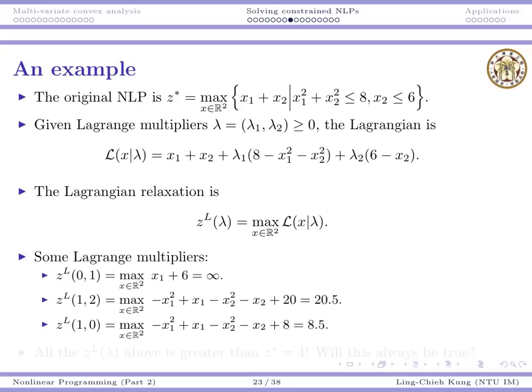Different lambda definitely gives you different values. Let's see some examples. Suppose I randomly pick 0 and 1 as λ1 and λ2. When I set λ1 as 0 and λ2 as 1, the problem becomes this, and to maximize it, we get infinity. There is no solution that is optimal.